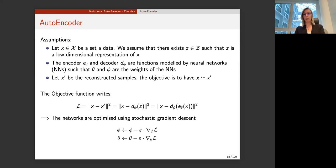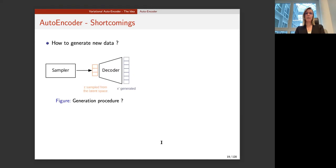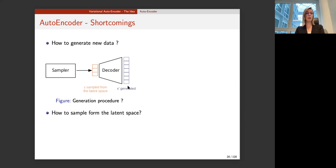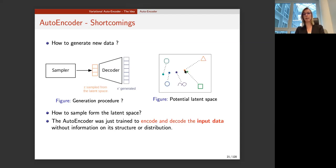The networks are parametric and we optimize this quantity through stochastic gradient descent, computing the gradient with respect to both the decoder parameters phi and the encoder parameters theta. To generate new data, you would sample from the latent space and put that through the decoder. However, the latent space of a standard autoencoder is not organized at all — points close to each other in latent space may not correspond to close images in the original space.